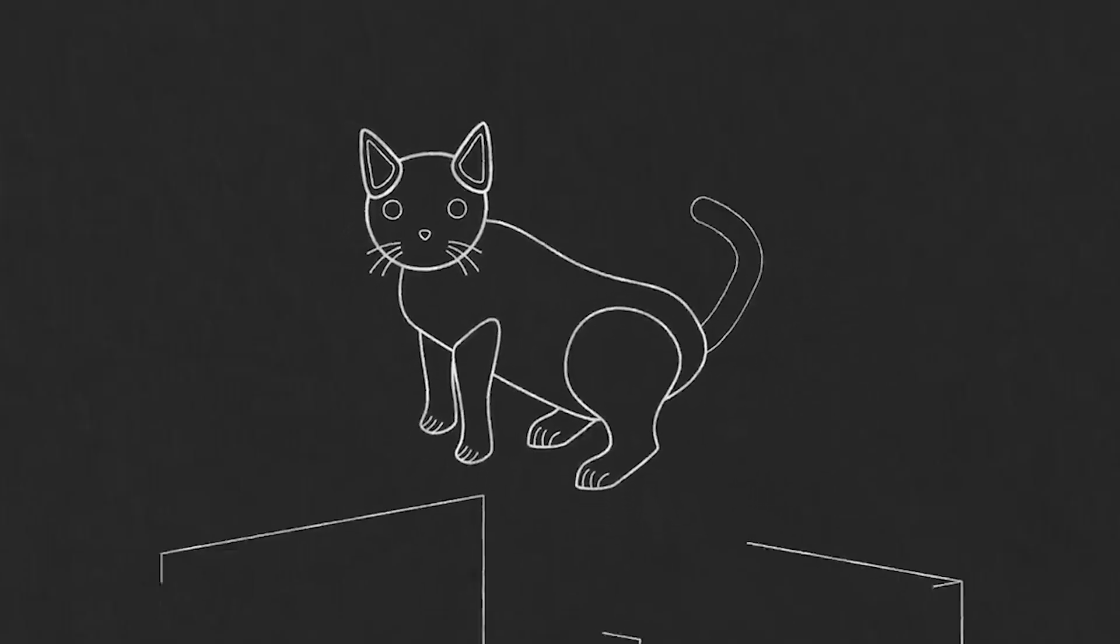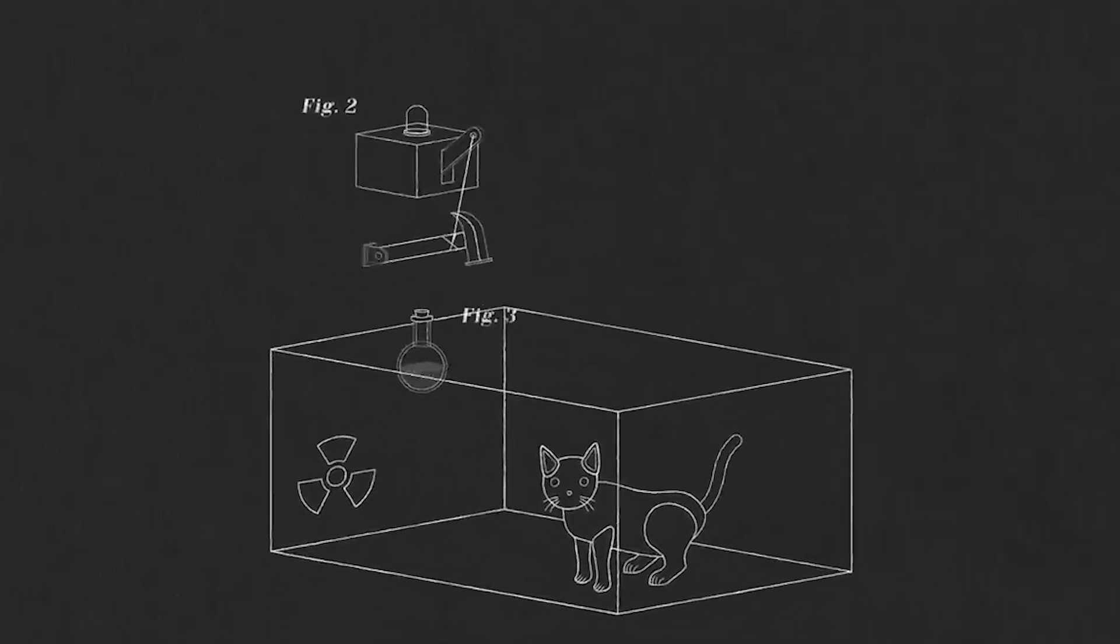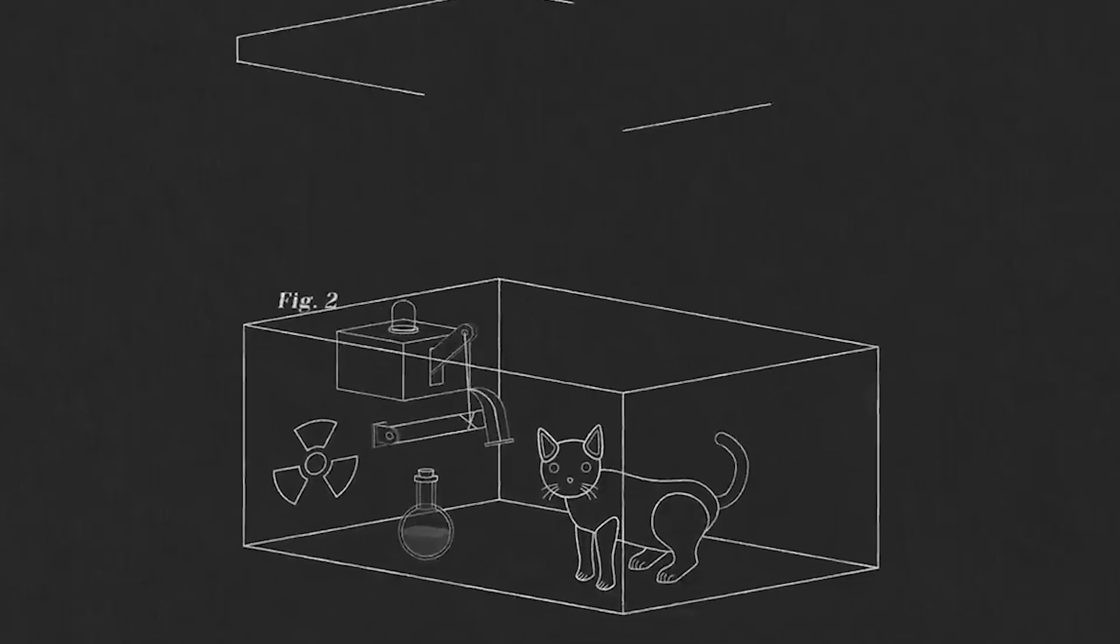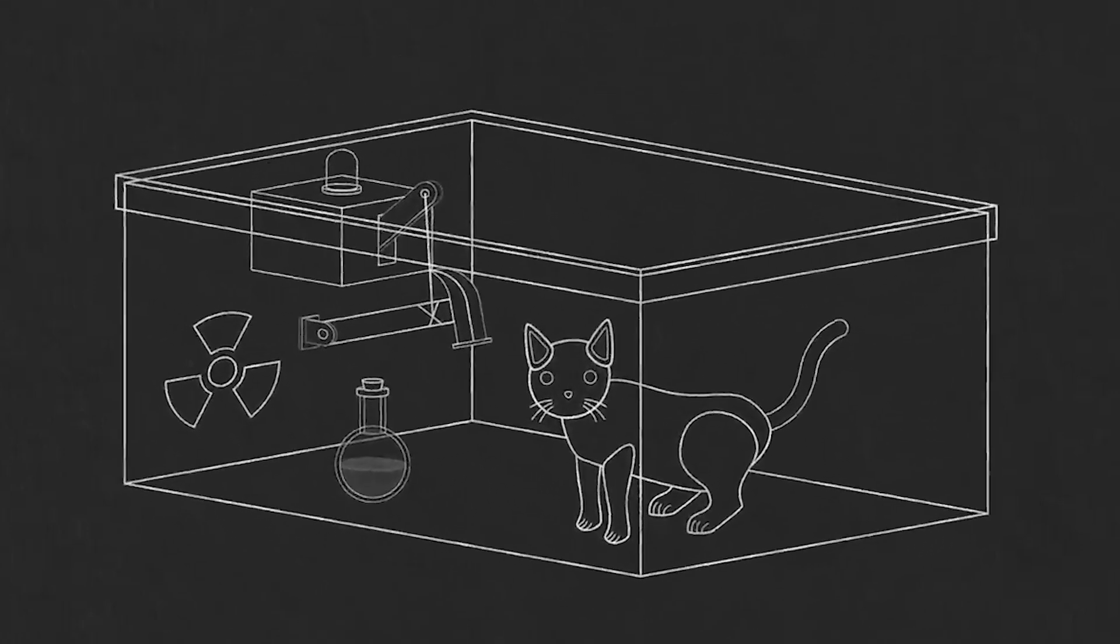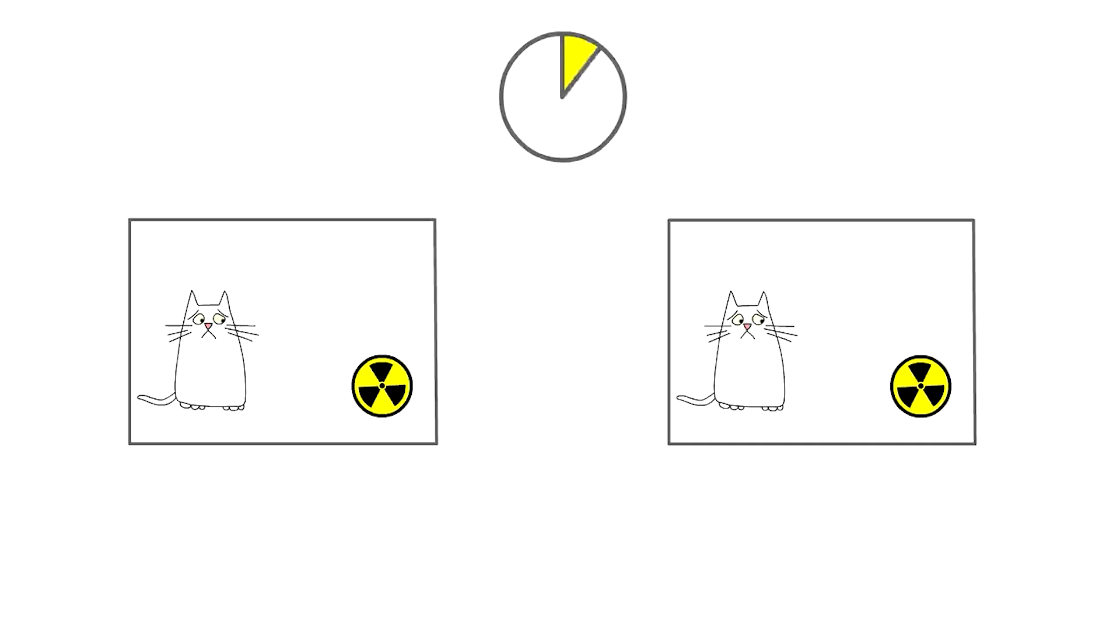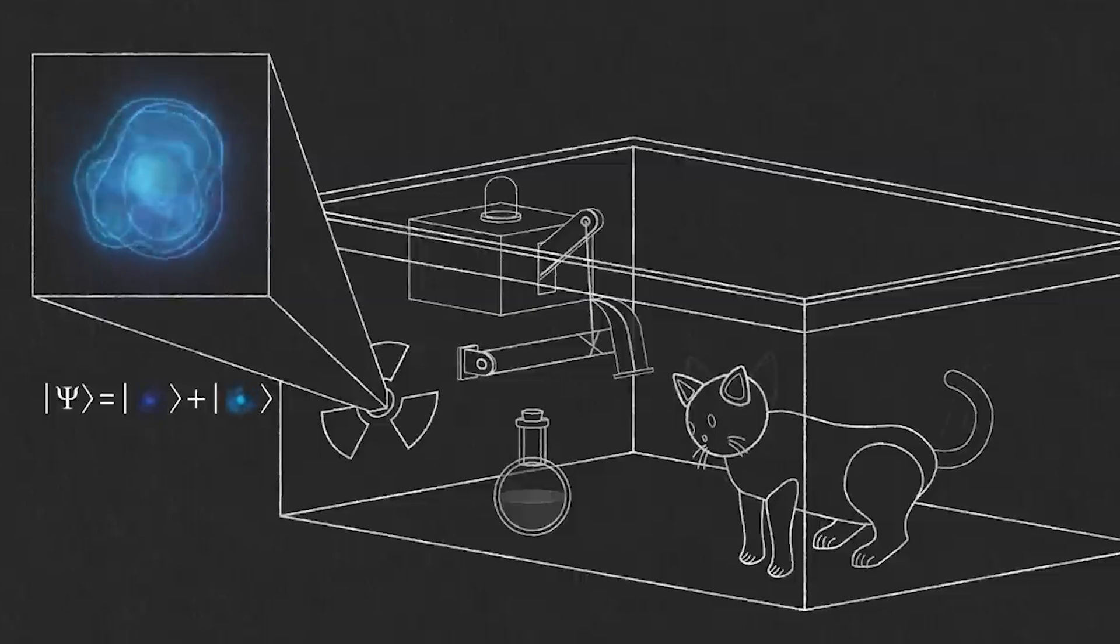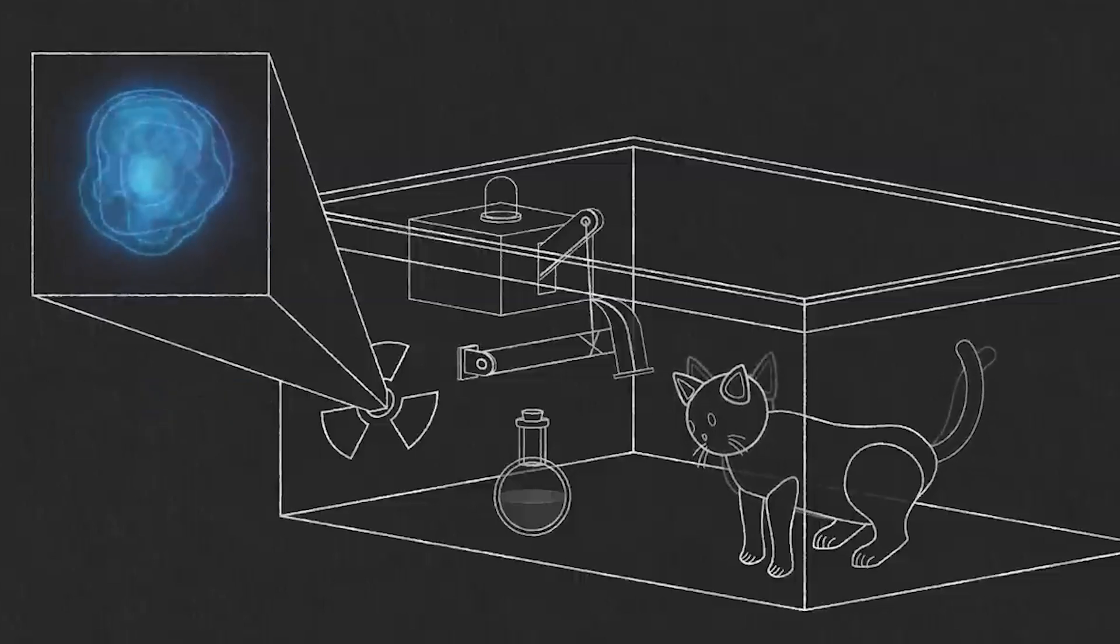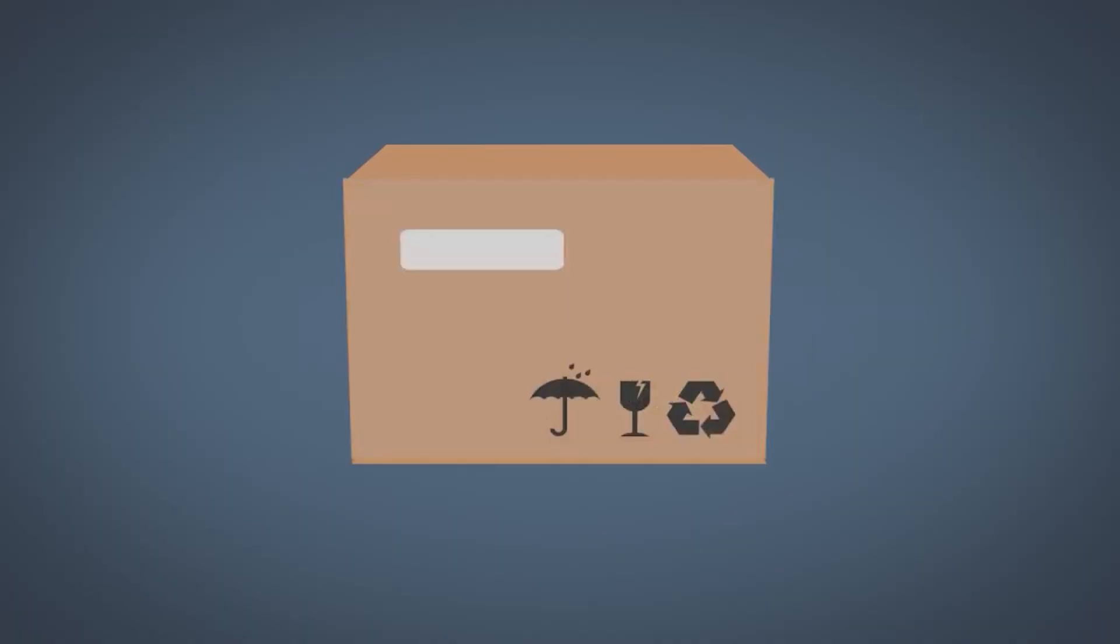Imagine placing a cat inside a completely sealed box. Inside the box, there is also a Geiger counter, a small amount of radioactive material, a vial of poison, and a hammer mechanism. The radioactive material has a 50% chance of decaying within an hour. If it decays, the Geiger counter detects radiation, activates the hammer, breaks the vial, releases the poison, and the cat dies. If it doesn't decay, the cat remains alive.